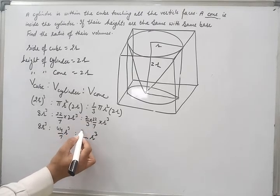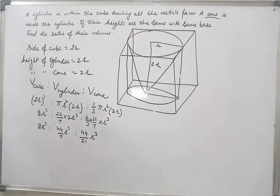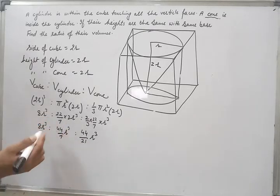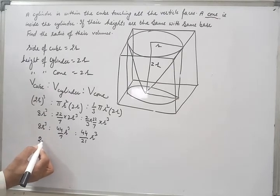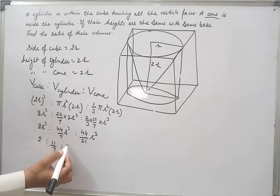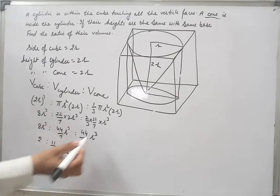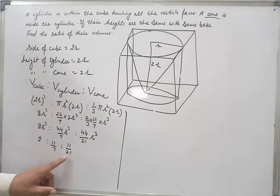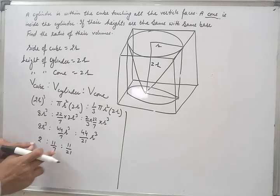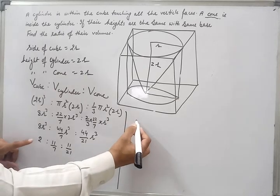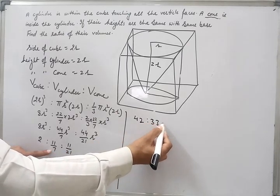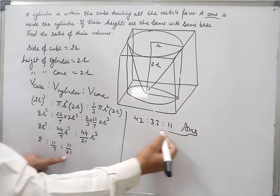The cone term is 44/21 r³, not 66. Now, 4r³ is common in all three terms, so divide by 4r³. This gives 2 : 11/7 : 11/21. The LCM of 21 and 7 is 21, so multiply all three terms by 21. It becomes 42 : 33 : 11. So this is the required ratio.